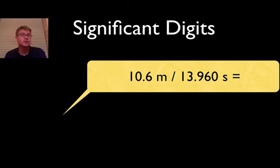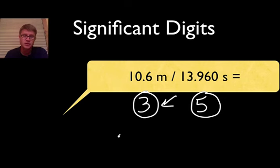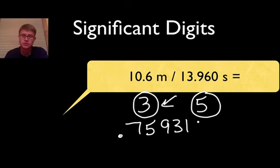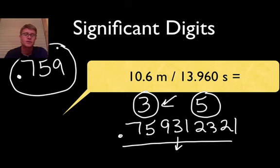Going back to the original example: 10.6 meters divided by 13.960 seconds. 10.6 has 3 significant digits and 13.960 has 5. So the answer can only have 3 significant digits. Even though the calculator gives 0.759312321, the correct answer is 0.759 — 3 significant digits, and since the next digit is 3, we don't round up. That's how you do significant digits. Practice them and ask for help if you get lost.